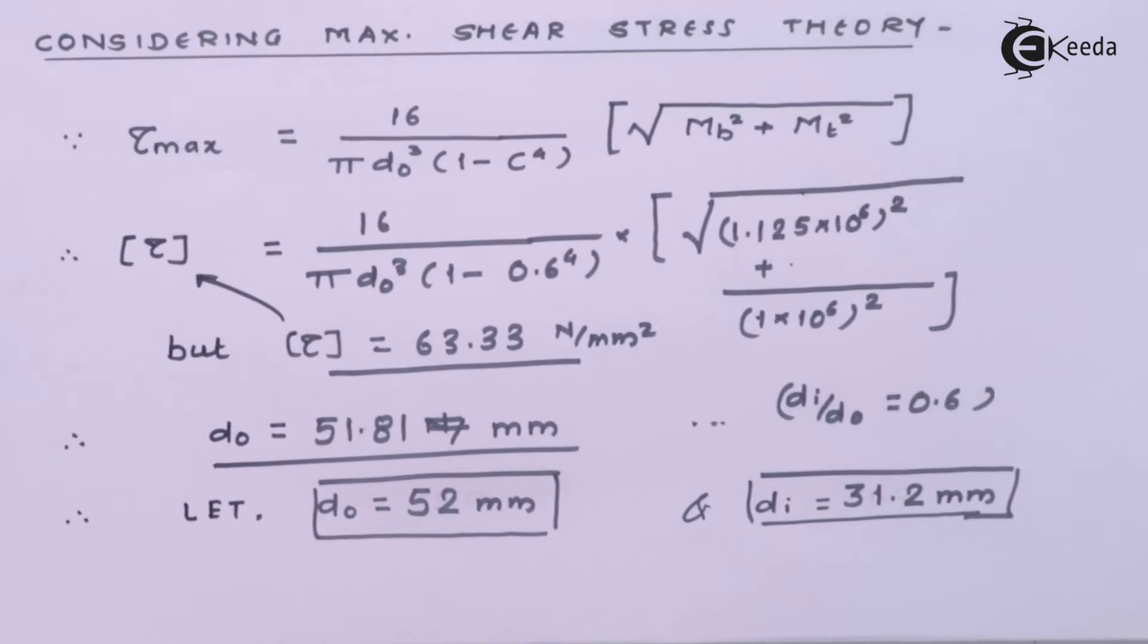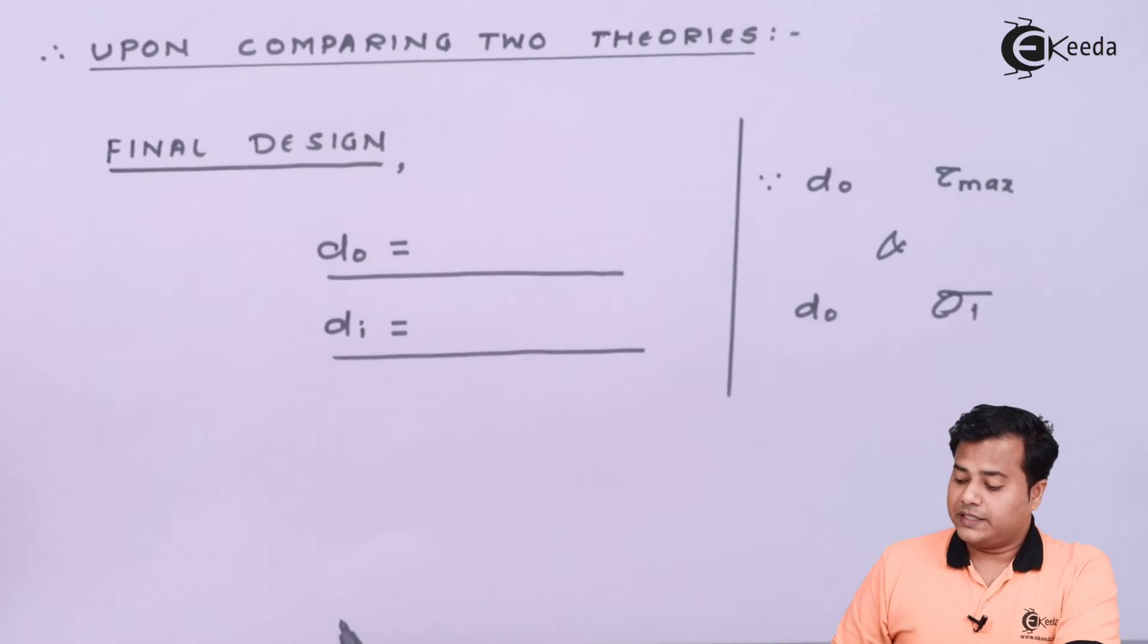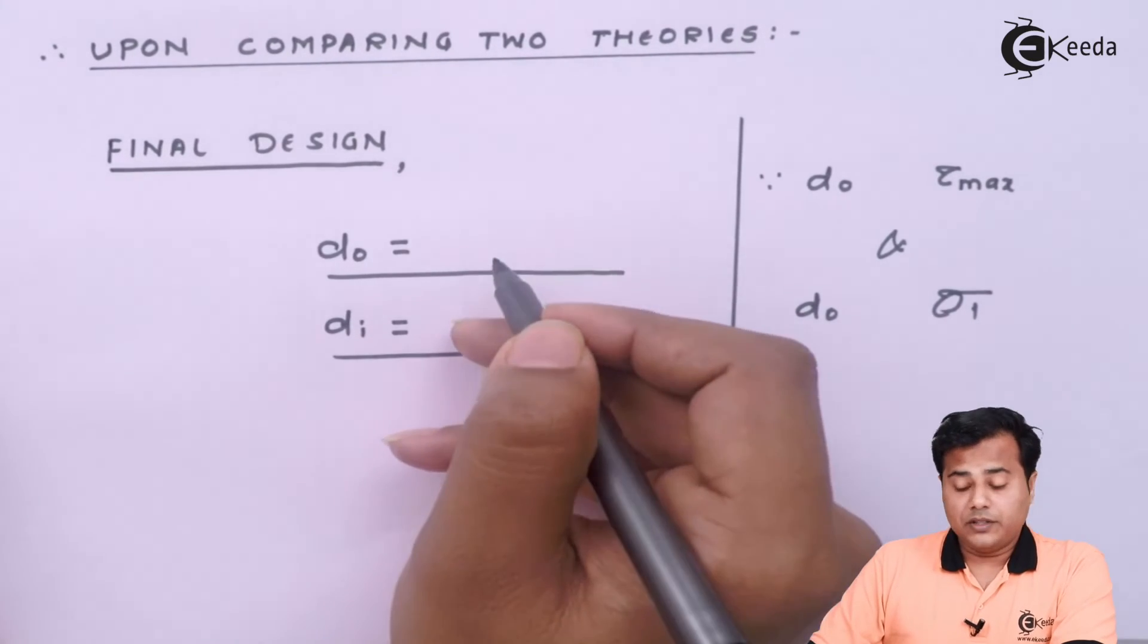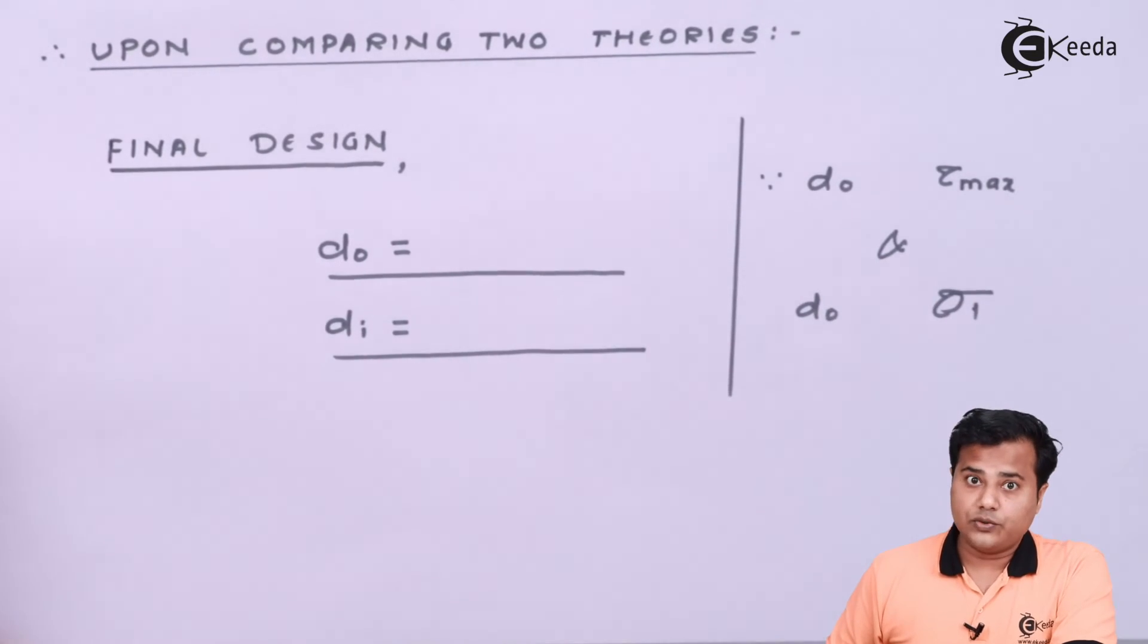But now we have got two sets of values for inner diameter and outer diameter. So for the final selection upon comparing two theories, final design says that the outer diameter, the final diameter which is outer one and the inner one are based on this particular logic. Let us try to understand this.